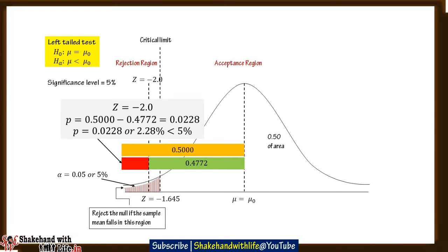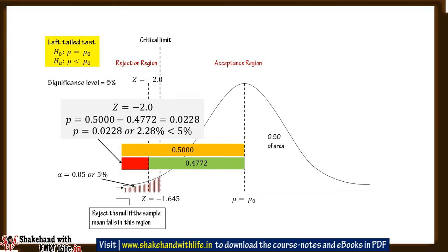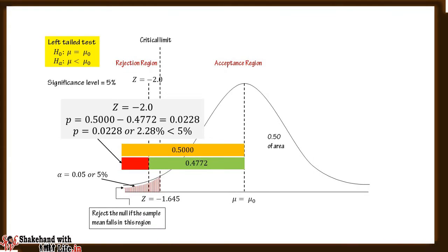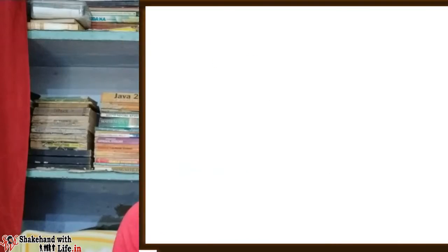In case of a left-tailed test, the p-value is the area to the left of the calculated value of the test statistic. Suppose the calculated value of Z is −2.00; then the area to the left of it, using the table area under the standard normal distribution, is 0.5 − 0.4772 = 0.0228. Hence the p-value is 2.28%. At an alpha of 5%, the null hypothesis will be rejected because the p-value is less than 5%.